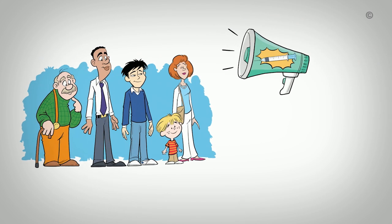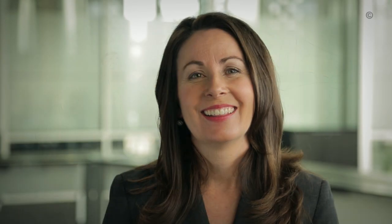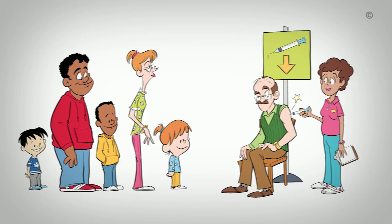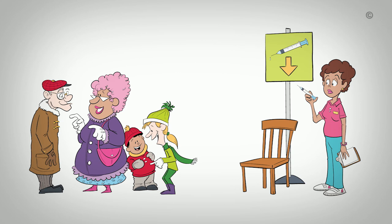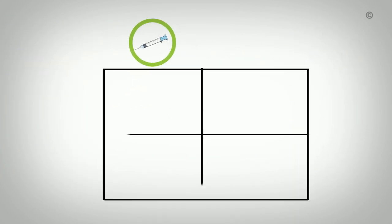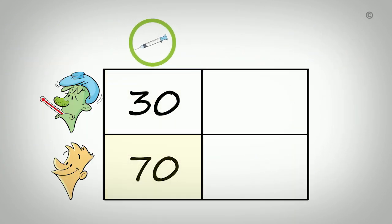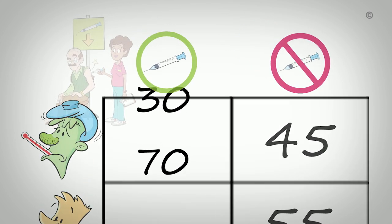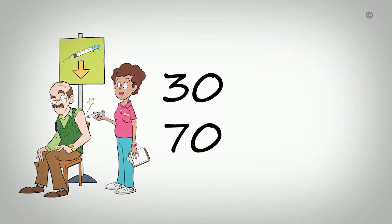Therefore, it appears the intervention was effective. Let's look at this from another perspective, again using hypothetical data. This time, let's take a look at the effectiveness of the flu shot in reducing the likelihood of getting the flu. So, let's say we have 100 people who had the flu shot and another 100 people who haven't. Among those who had the shot, 30 of them get the flu and 70 do not. Among those who didn't get the shot, 45 get the flu and 55 do not.